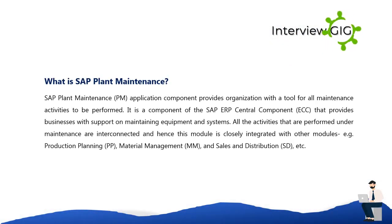SAP Plant Maintenance (PM) application components provide organizations with a tool for all maintenance activities to be performed. It is a component of the SAP ERP Central Component (ECC) that provides businesses with support on maintaining equipment and systems. All activities performed under maintenance are interconnected, and hence this module is closely integrated with other modules.